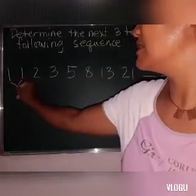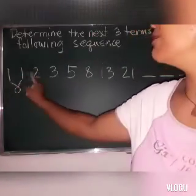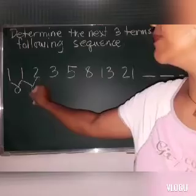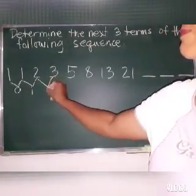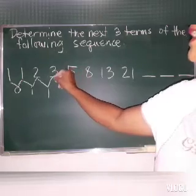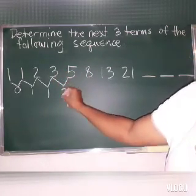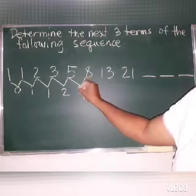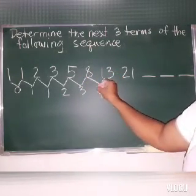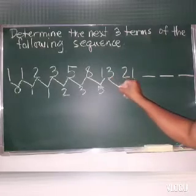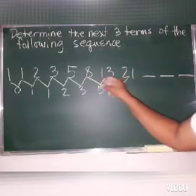So, 1 minus 1, 0. 2 minus 1, 1. 3 minus 2, 1. 5 minus 3, 2. 8 minus 5, 3. 13 minus 8, 5. 21 minus 13, 8.